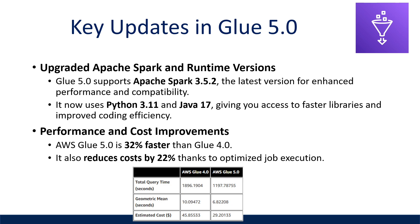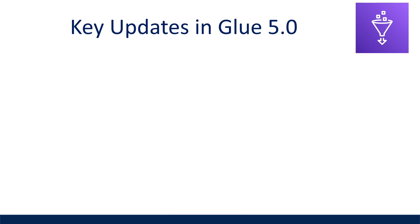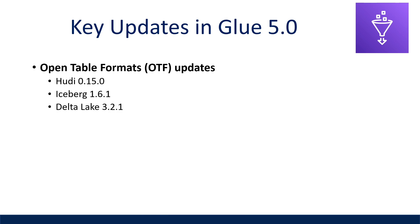There have also been open table format updates. These formats are key for organizations building lake houses on AWS. Hudi was upgraded to 0.15.0, Iceberg to 1.6.1, and Delta Lake to 3.2.1.